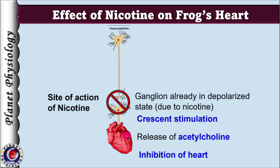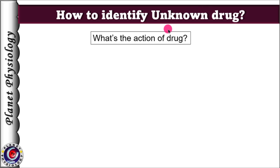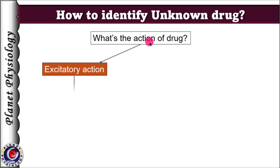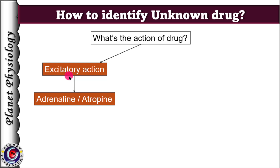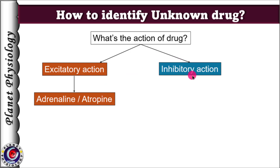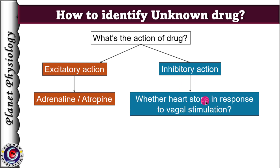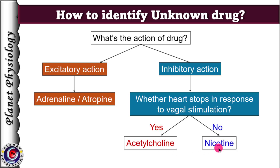During an examination, if you get a graph to identify an unknown drug, first observe its effect — whether heart rate and force of contraction has increased or decreased. If increased, it can be either adrenaline or atropine. But if the drug has exerted inhibitory effects — decrease in heart rate and force of contraction — then it could be acetylcholine or nicotine. To differentiate them, observe whether the heart stopped in response to vagus stimulation. If yes, the drug is acetylcholine; if no, the drug used is nicotine.